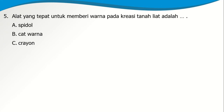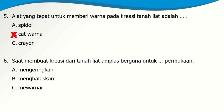Soal nomor 5: Alat yang tepat untuk memberi warna pada kreasi tanah liat adalah A. Spidol, B. Cat warna, atau C. Krayon. Kalau dari tanah liat, kita harus memakai cat warna. Krayon tidak bisa, spidol juga tidak bisa untuk mewarnai tanah liat. Nomor 6: Saat membuat kreasi dari tanah liat, amplas berguna untuk menghaluskan permukaan. Jawaban B: menghaluskan.